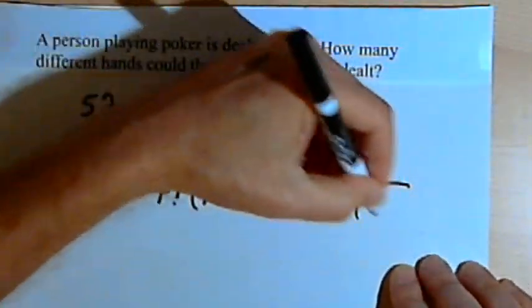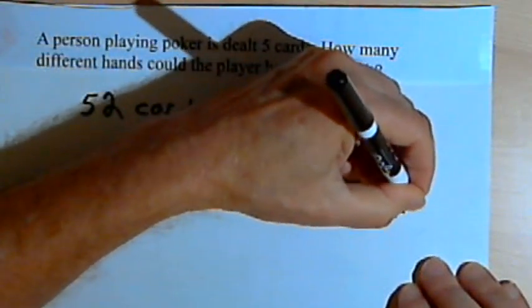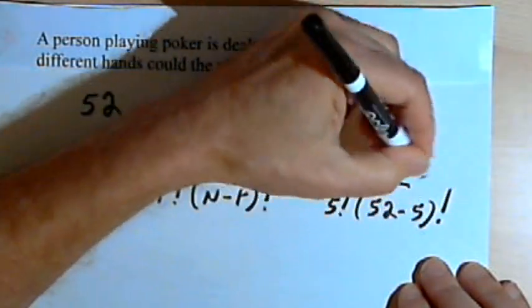And then I've got n minus r, which is 52 minus 5. And that's factorial.